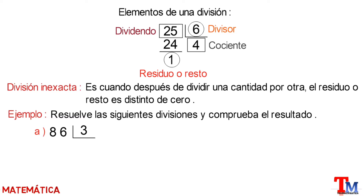Para comenzar, seleccionaremos la primera cifra de izquierda a derecha del dividendo, siempre y cuando ésta sea mayor o igual que el divisor. Como este valor es mayor, entonces buscamos un número que multiplicado por 3 se acerque al 8, que en este caso es 2.